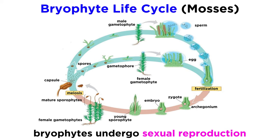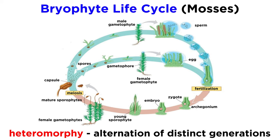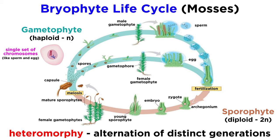Bryophytes, like essentially all plants, go through sexual reproduction. But plant life cycles and reproduction are a little more complicated than what we've discussed for animals in the biology series. Plants demonstrate heteromorphy, or a quality in which they have two genetically and morphologically distinct generations that alternate.